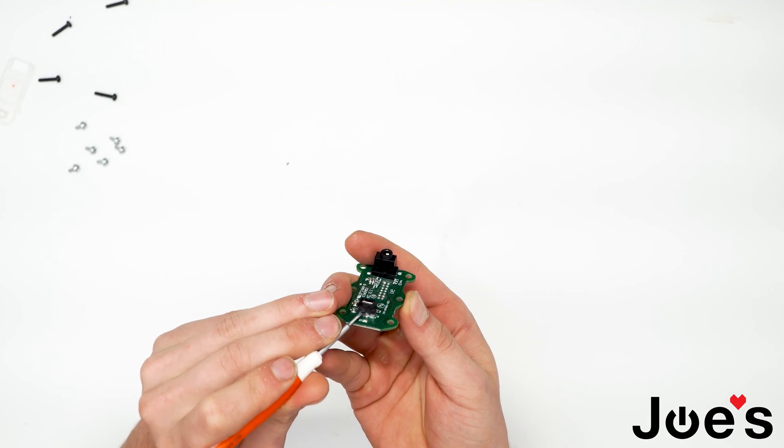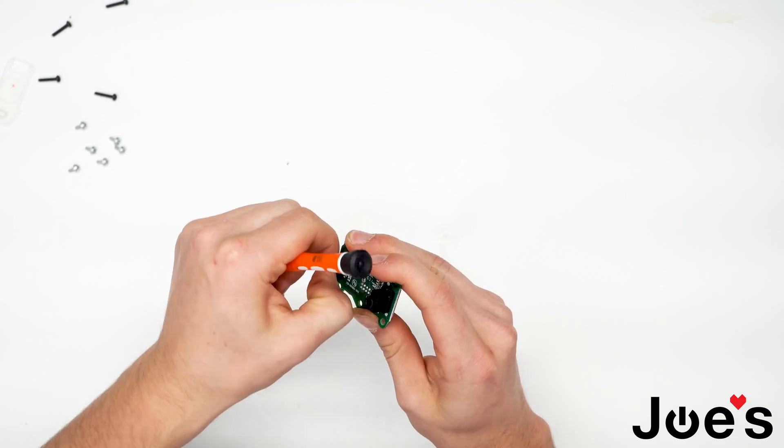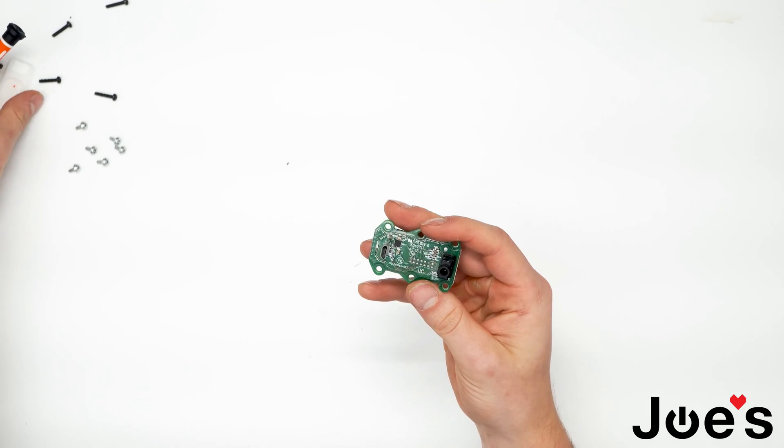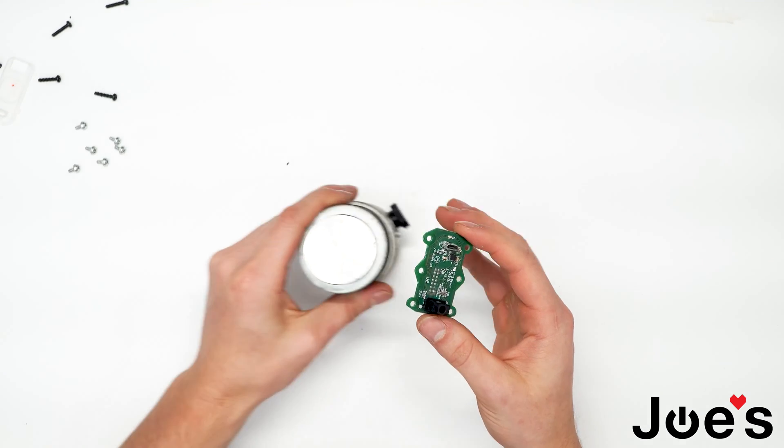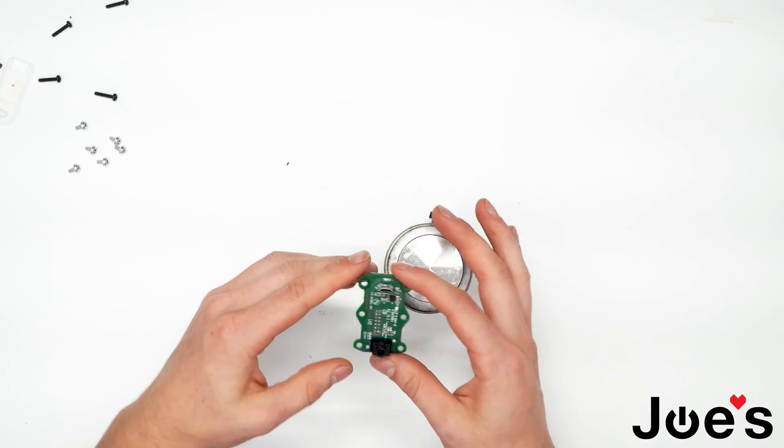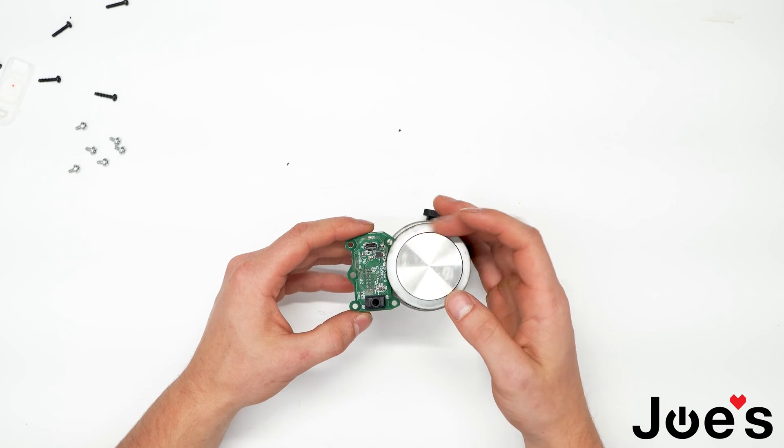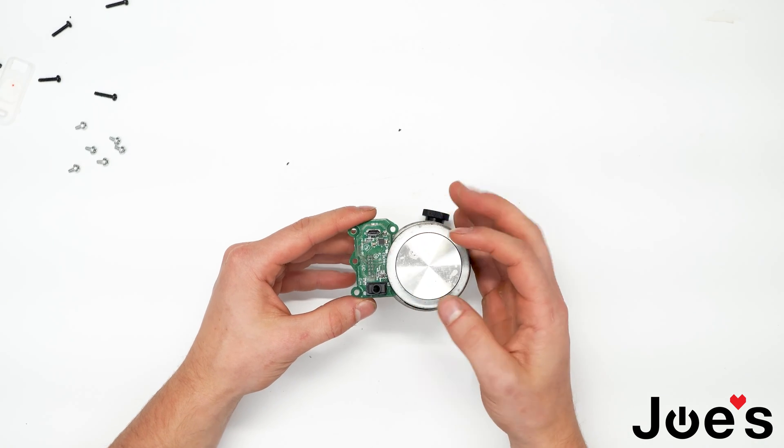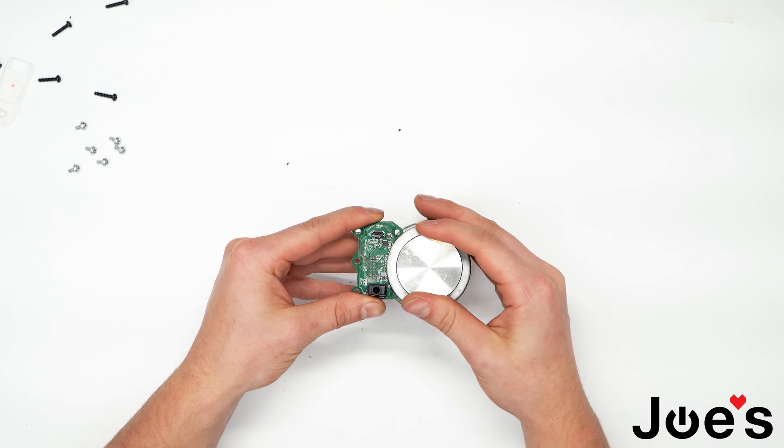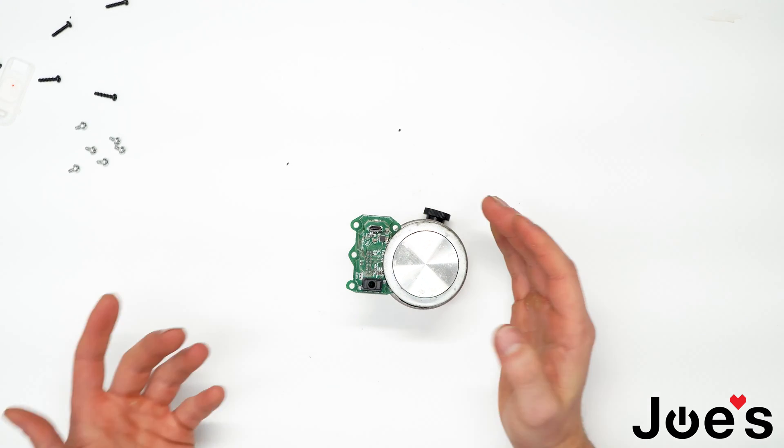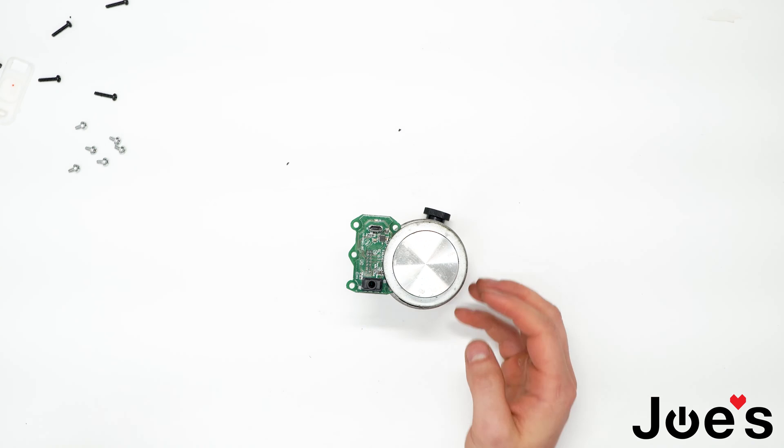There's just one more covering on the port. There we go. Next, let's grab our Omni vise and attach the PCB onto it. And now we're ready to start working with our heat gun.